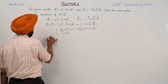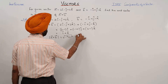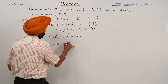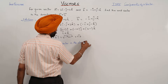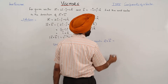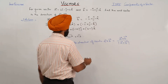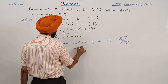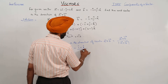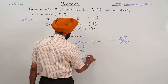Now we have to find the unit vector in the direction of vector A plus B. The unit vector A plus B is equal to vector A plus vector B upon the magnitude of this vector.